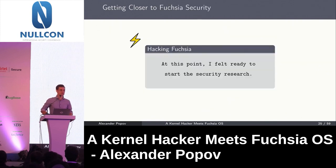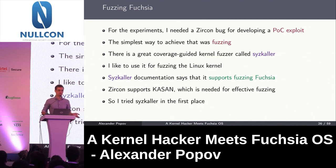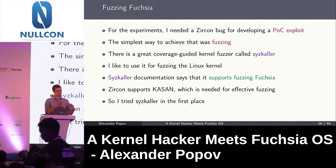At this point I understood I had everything for successful security research on this system. My goal was to develop a proof-of-concept exploit for a Zircon bug. The simplest way to find such a bug is fuzzing. There is a great coverage-guided kernel fuzzer called syzcaller, which I have used for the Linux kernel for many years. Syzcaller documentation says it supports fuzzing Fuchsia, so I built Zircon with kernel address sanitizer and decided to fuzz it.